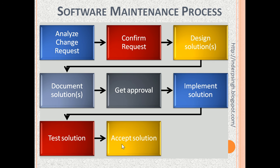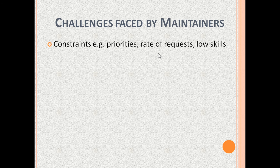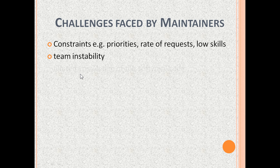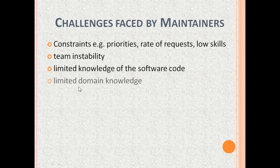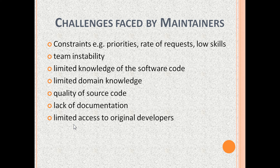Let us see the challenges or issues in software maintenance. These are constraints like changing user priorities, high rate of requests, or low skill levels in skills like debugging, programming and communication. Team instability. The maintenance team may have limited knowledge of the software source code. They may have limited domain knowledge. The source code quality may be poor — for example, it may have low readability. There may be lack of documentation. The original software developers may not be available.